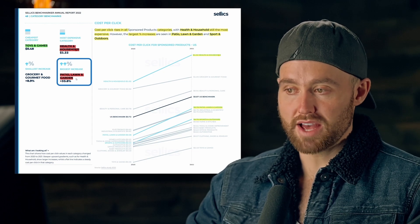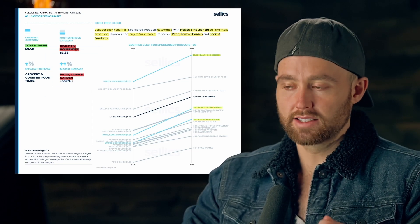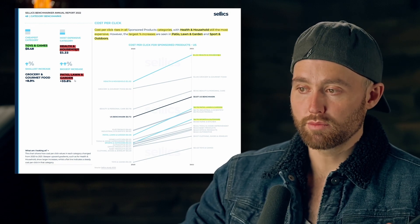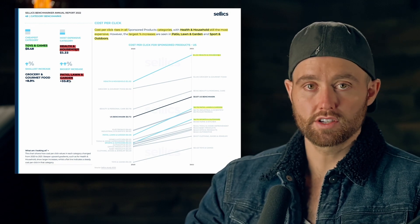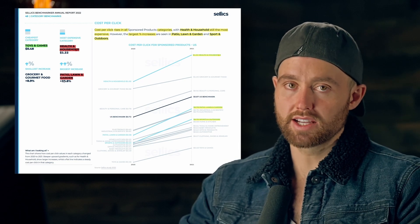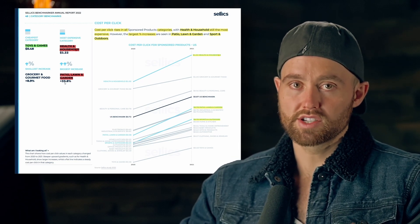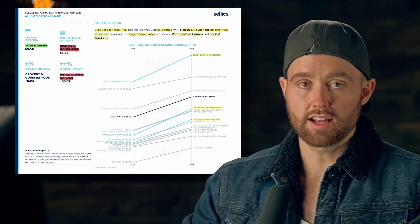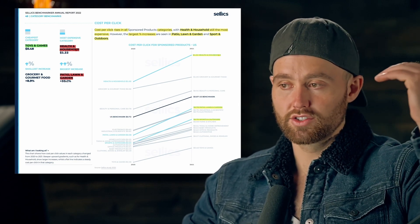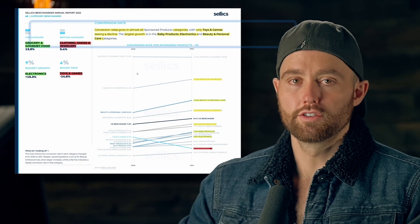Patio, lawn and garden's cost per click increase makes sense: pre-pandemic, people might go to a physical store to buy those products, but now they're buying online, meaning sellers are moving online and driving up the cost per click for those ad positions.